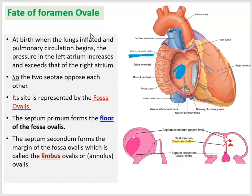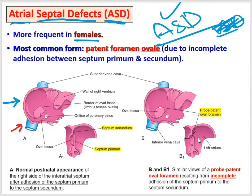The septum primum is elastic and membranous, and the septum secundum sits adjacent to it. After the first breath, pressure in the left atrium increases and becomes greater than in the right, pushing the septum primum against the septum secundum. They adhere or fuse to each other and become enclosed. Normally after birth, there should be just a fossa ovalis remnant with no open foramen.